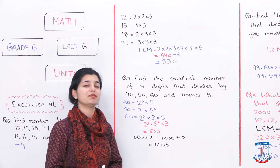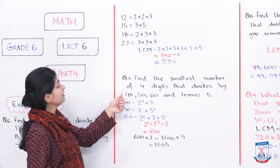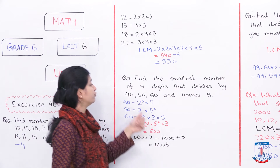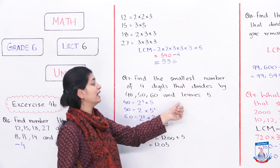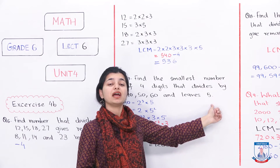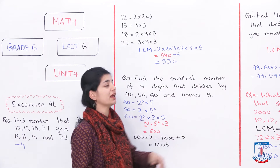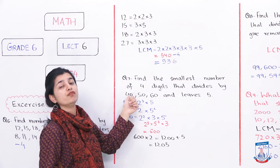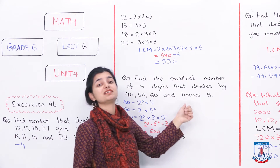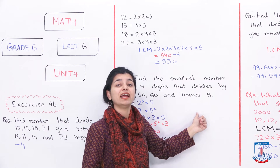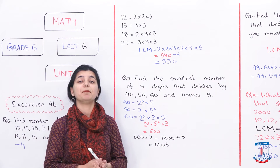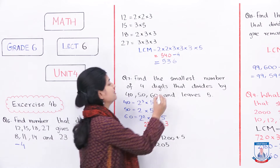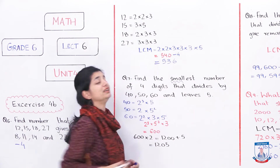Question number 7: Find the smallest number of 4 digits that is divisible by 40, 50, and 60, and leaves a remainder of 5. There is a similar technique here. You have to find the smallest 4-digit number divisible by 40, 50, and 60 — meaning it must be a multiple of all three. Since it is the smallest, you need the least common multiple.